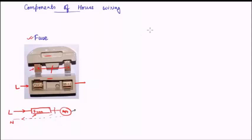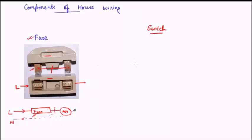Second, let us see switches. A switch is one of the most common components in wiring. Every bulb in your house has a switch — you switch on the bulb and the bulb starts glowing; you switch on the fan switch and the fan starts running. A switch is basically a mechanism to provide discontinuation and continuation in a circuit — it's essentially an on and off device. Let us draw a diagram to understand this better.